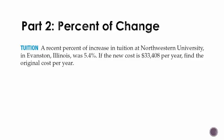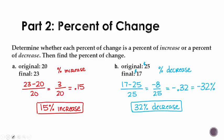Let's try this with a story. A recent percent of increase in tuition at Northwestern was 5.4%. The new cost is $33,408 per year. We need to find the original cost. So this is our final.